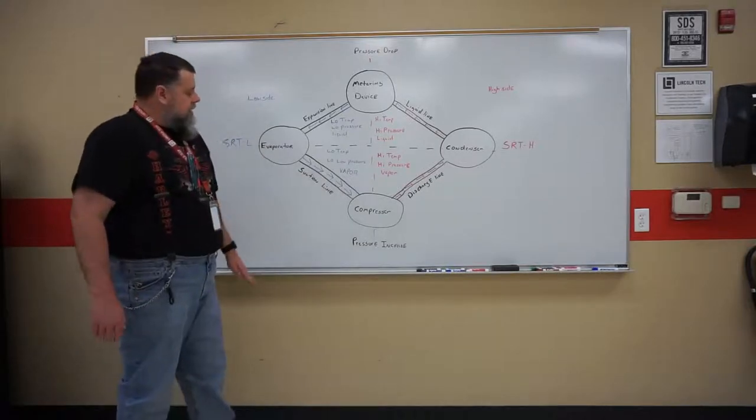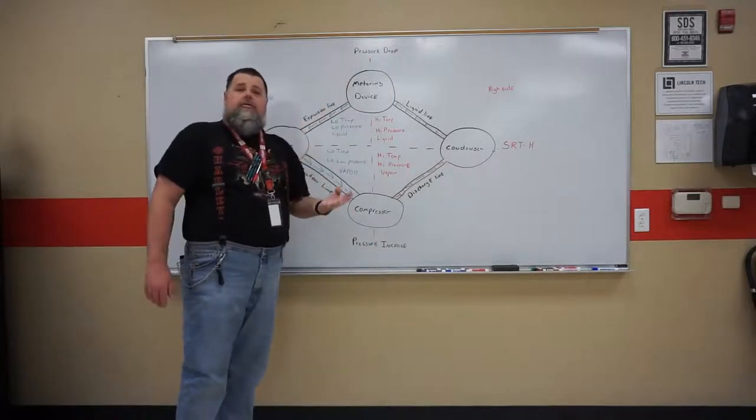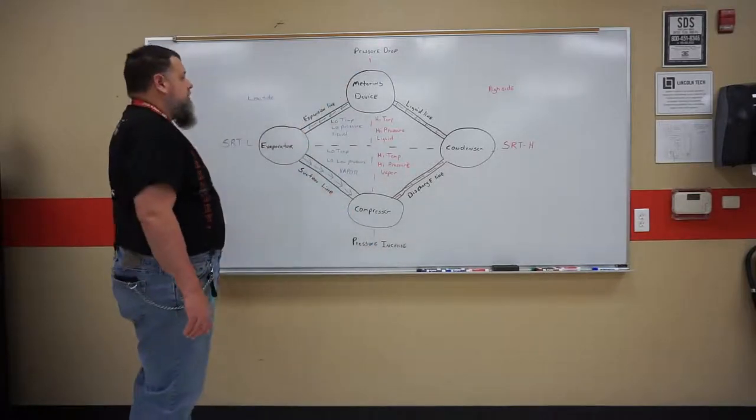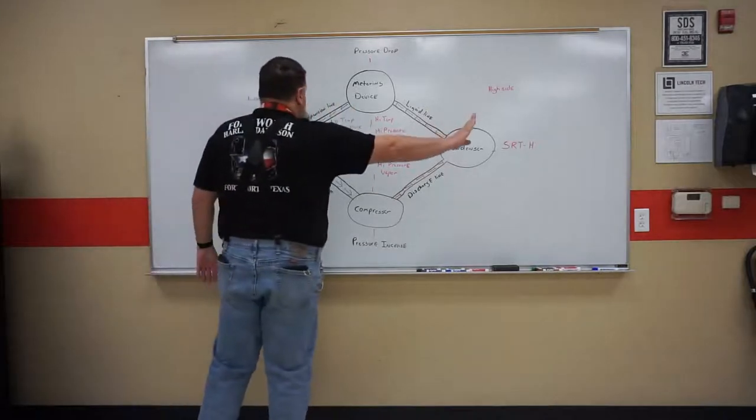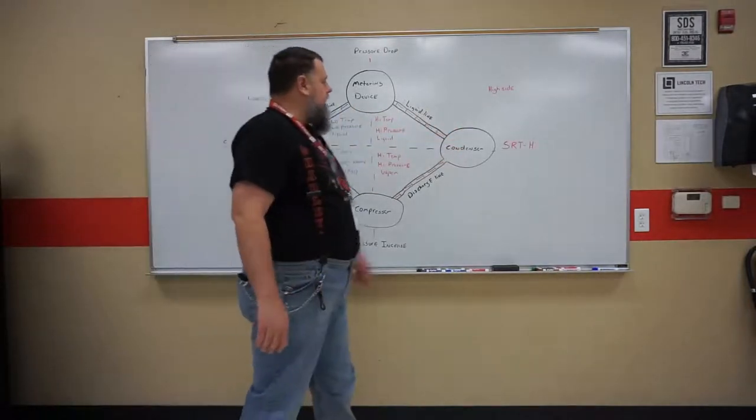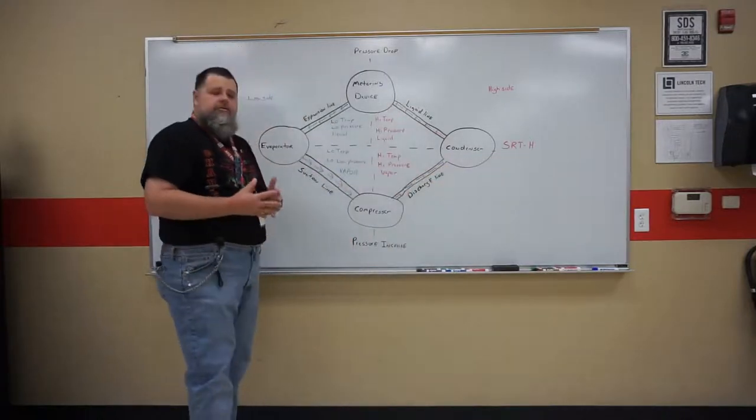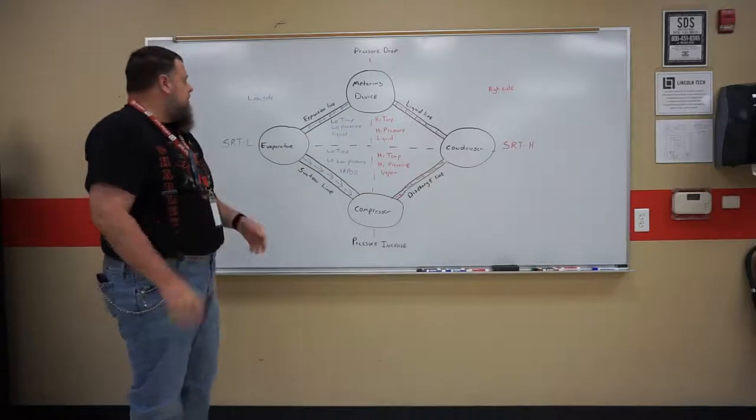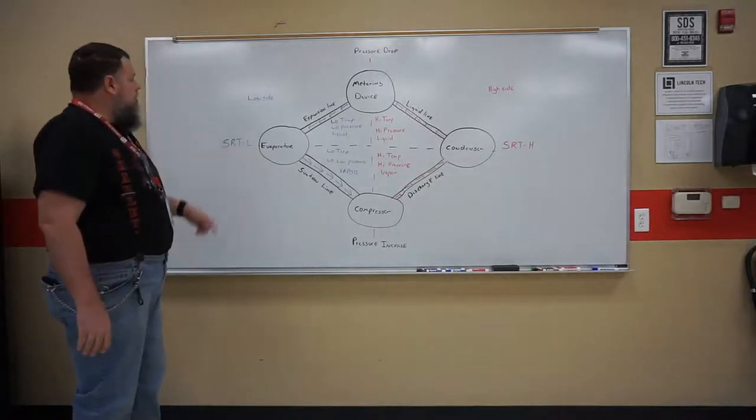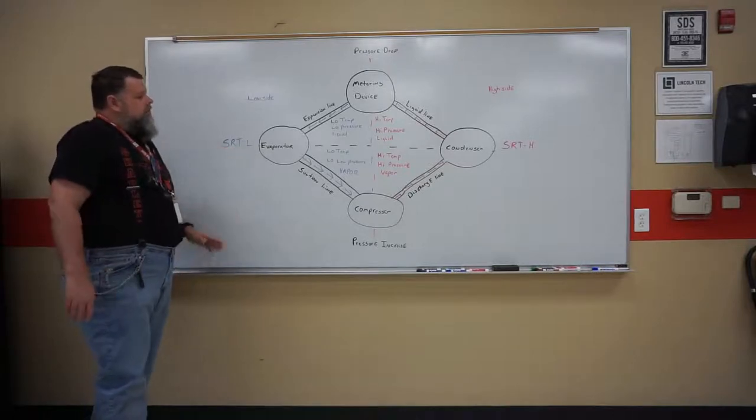We also talked about that the compressor causes a pressure increase. The metering device causes a pressure decrease into the system. That's how we have our high side to this side, our low side to that. We also find SRT high in our condenser. That's saturated refrigerant temperature high. Use a PT chart to find that. Same thing with your SRT low. You find your PT chart to find the low side pressure.